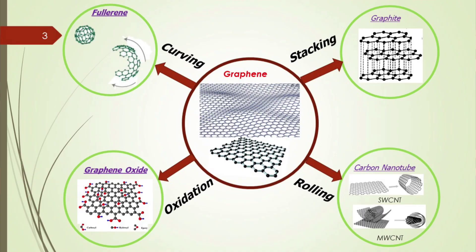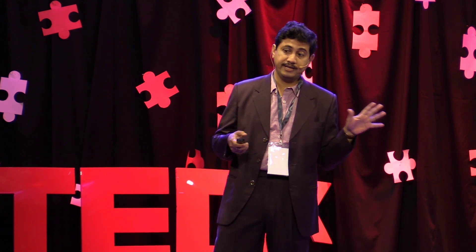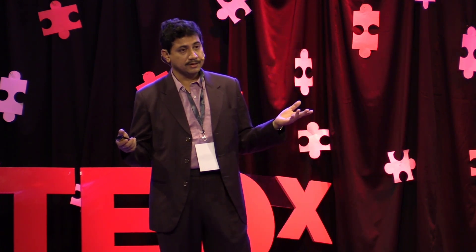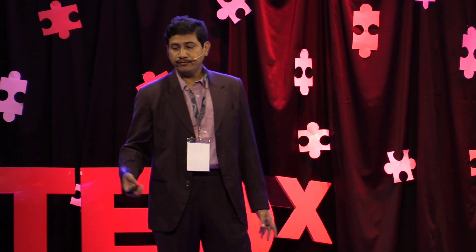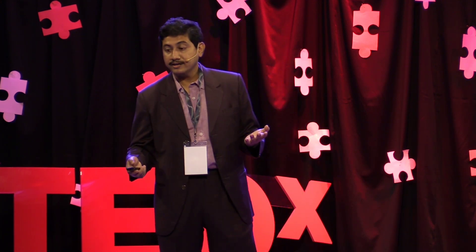What is graphene? The carbon atoms are hexagonally arranged in a particular fashion in a planar structure. With this structure, we can give rise to any kind of material we want to design. For example, if we stack one layer above another, we end up with a material called graphite.